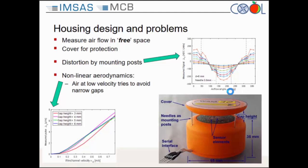We also have to face a second problem: the non-linearity of aerodynamics. Air at low velocities simply tries to avoid gaps, because at low velocities airflow is mostly driven by friction, not by inertial forces. So it bypasses the gap and mostly goes around our housing. This gives us a very low sensitivity at low velocities — even lower than you would expect for a linear system. These were the two main challenges we were facing in the optimization of our housing.